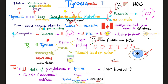Accumulation of tyrosine, or increased tyrosine in the urine, will give a characteristic rancid butter odor. Never ever forget this: rancid butter odor of the urine equals tyrosine.